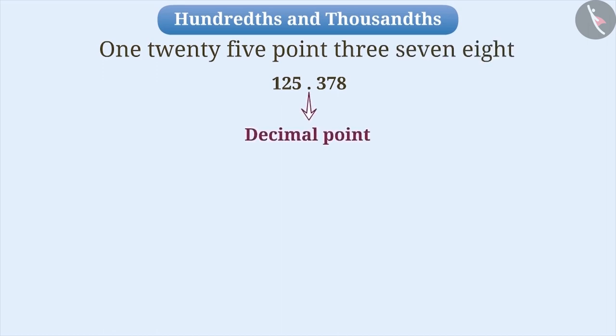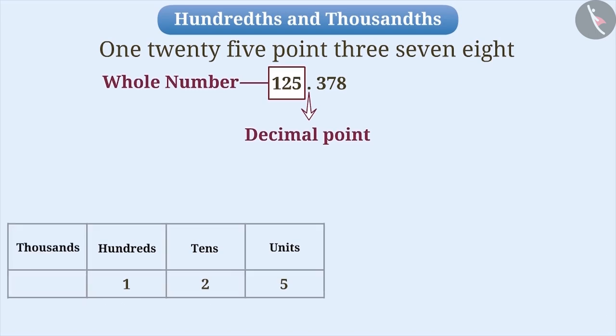To the left side of the decimal point is a whole number. To represent it, we will use places like Units, Tens, Hundreds, and Thousands. Similarly, to the right side of the decimal point, a part of the whole is expressed.